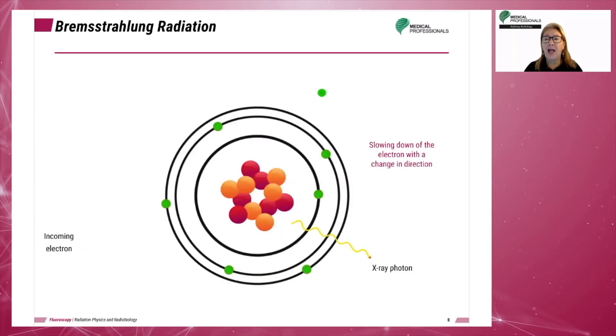Bremsstrahlung, commonly referred to as brems radiation, is caused by the slowing down or braking of electrons with a change in direction. This gives it the nickname braking radiation. Brems radiation can have an energy level anywhere from one electron volt up to a set maximum tube potential or kilovoltage peak. During the production of brems radiation, the electron involved interacts with an electron in the orbit of the tungsten atom but does not knock that electron out of orbit.